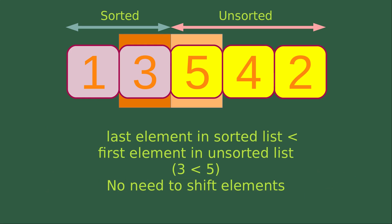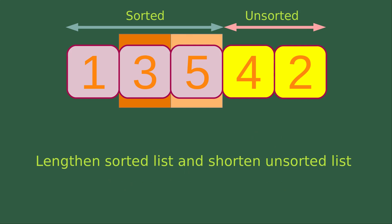Now let us see the second round of shifting if necessary. We see that the last element in the sorted list is smaller than the first element in the unsorted list, which means 3 is smaller than 5 according to our diagram. In this situation, we don't need to shift the elements. I simply lengthen the sorted list and shorten the unsorted list.